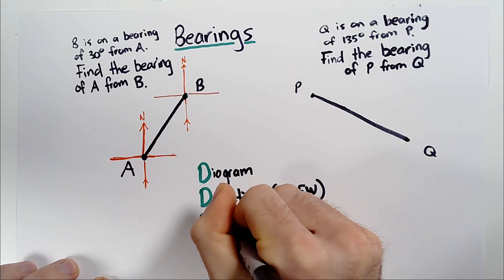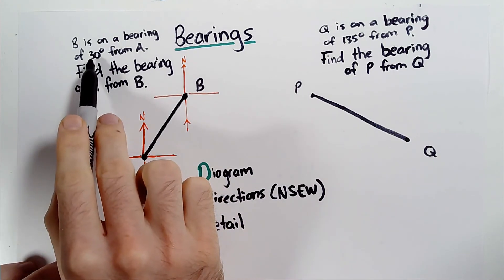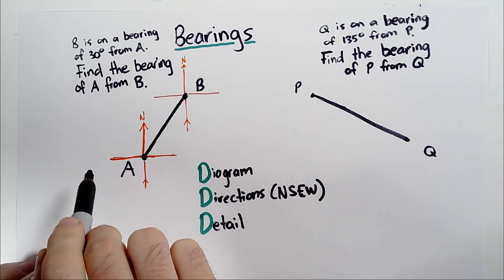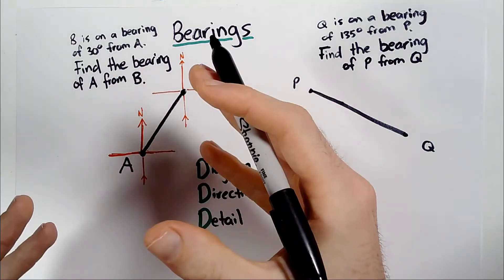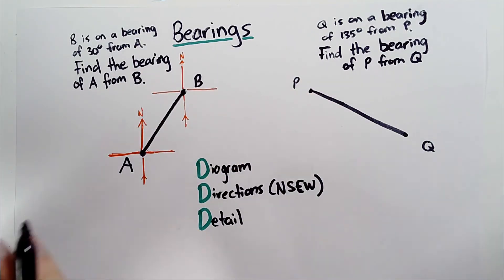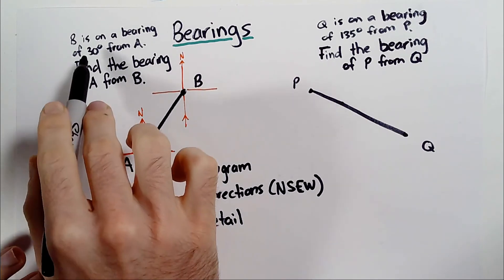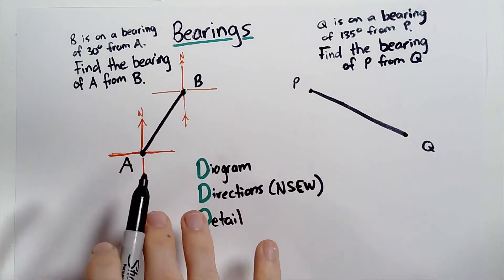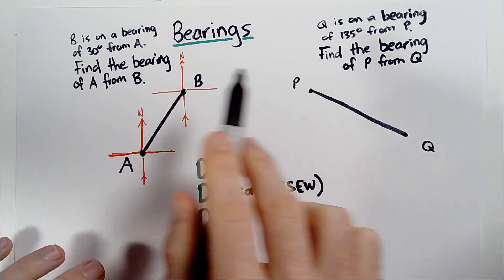The last D is for detail — fill in as much detail as you can in the diagram using the information from the question. Even where they give you just one number like 30 degrees, use that to fill in other numbers in the diagram. The more you can fill in from the outset, even with information that might not be used to get the answer, it puts you in a position ready to answer any question. Get used to taking the information given and using it to fill in as much as possible.